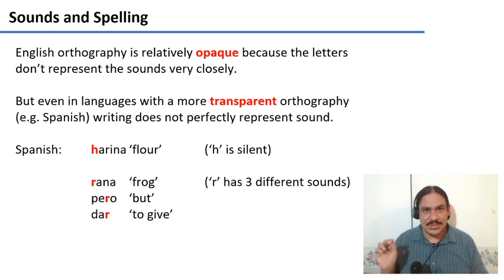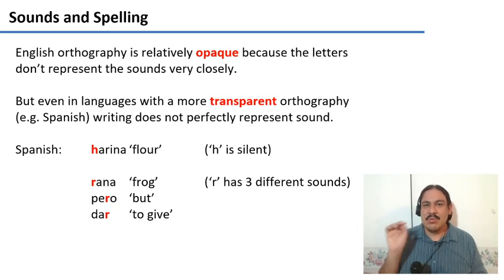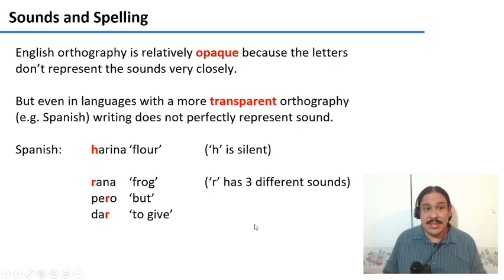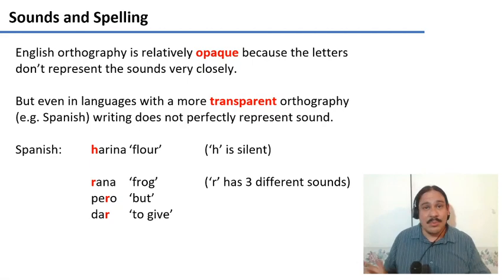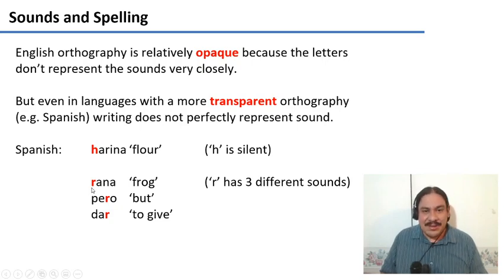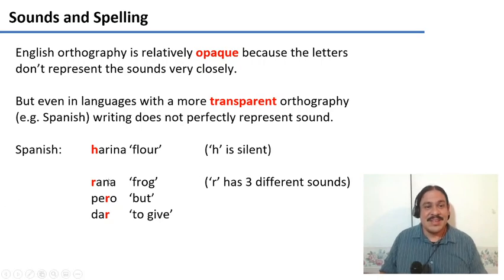This is true for all human languages. English is very opaque, but there are languages that are more transparent in their orthography, like Spanish. Even for those languages, writing does not correspond perfectly to sound. Spanish has a very transparent orthography, with a good correlation between letters and sounds. But even then, there are things in the writing that do not reflect what the language actually sounds like. For example, in the word 'harina' (flour), the H is silent — it's there because of historical processes; it used to sound like an F, it was 'farina' before. And the letter R in Spanish has three different sounds: different in 'rana,' 'pero,' and a rolled version. Same letter, three different pronunciations.